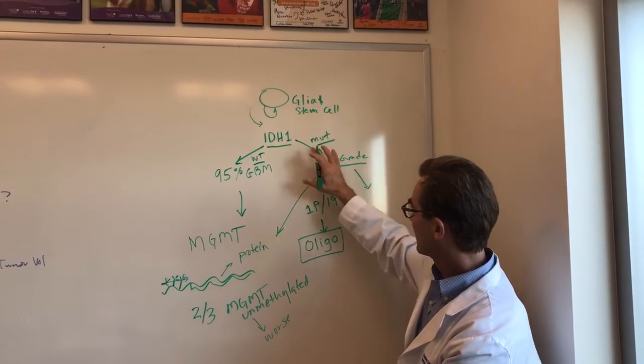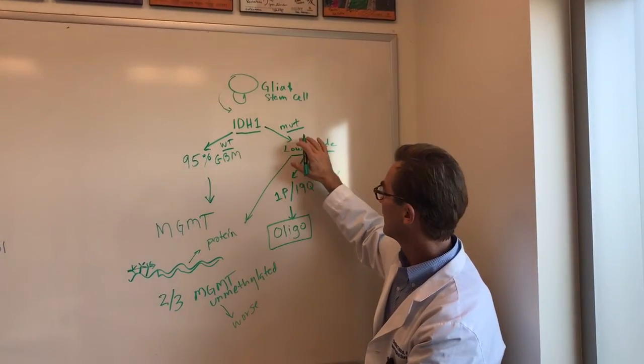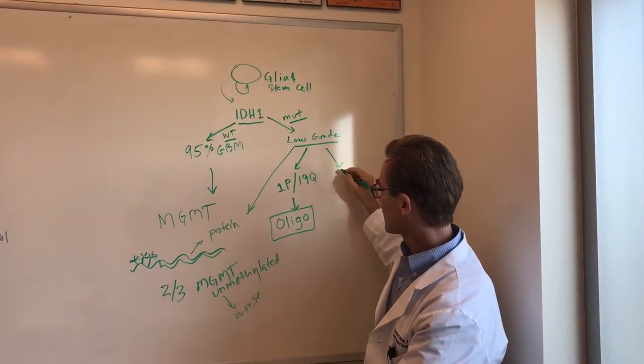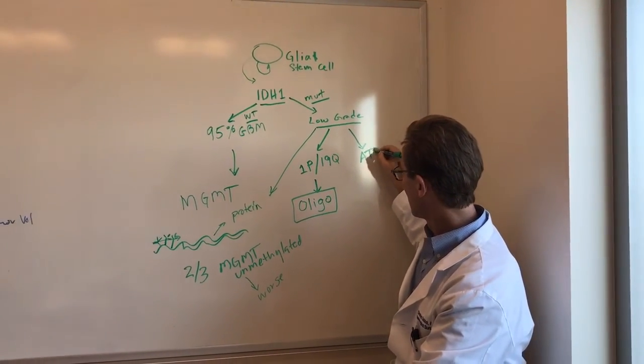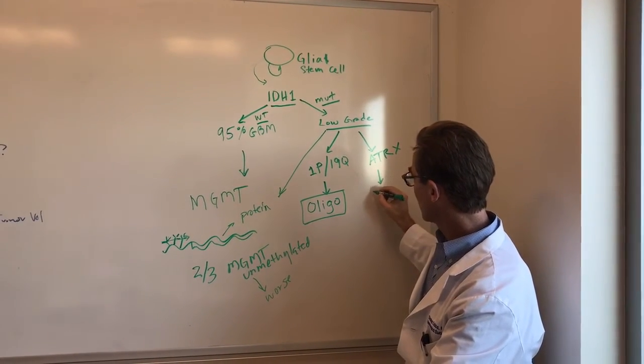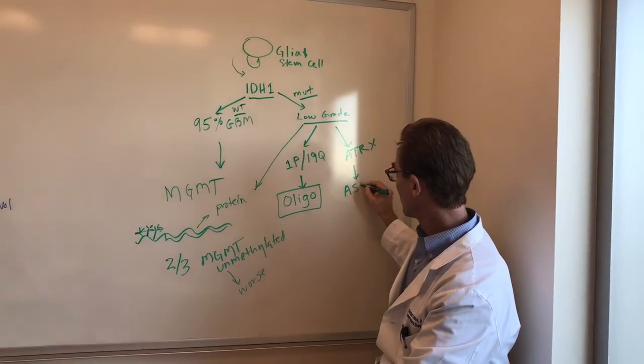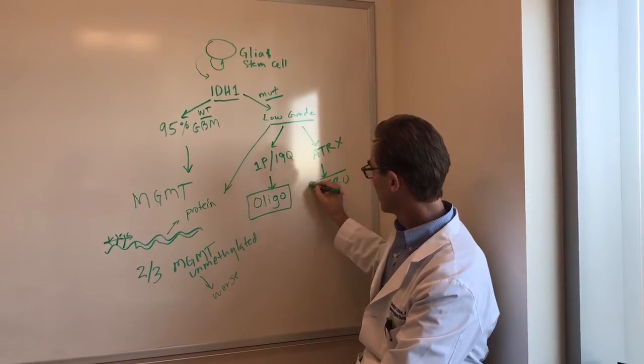However, if there's an IDH1 mutation and it has a mutation of something called ATRX, then it essentially falls into the astrocytoma category.